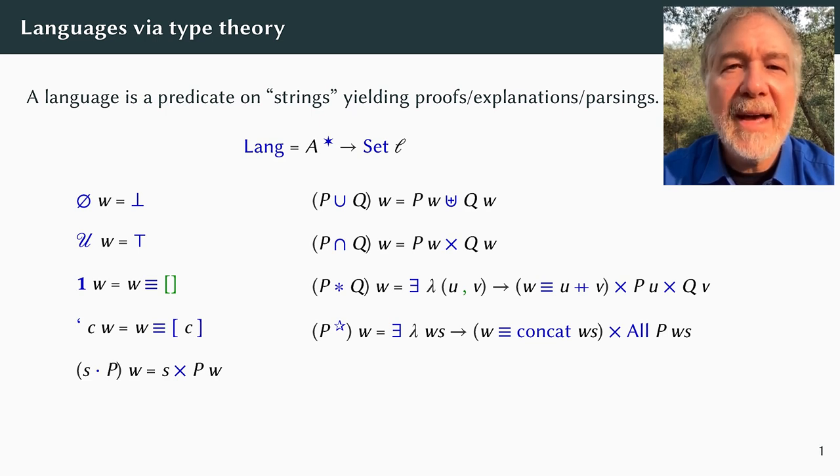The type X equals Y has a single inhabitant when indeed X does equal Y and otherwise is empty. Sum types are written with the disjoint union symbol. Non-dependent product types are written with the cross symbol. Dependent product types are written with the exist symbol.